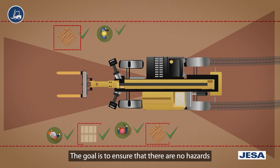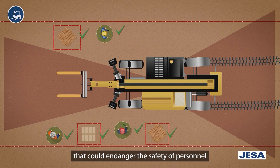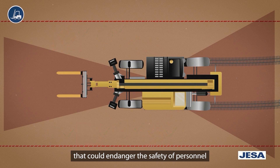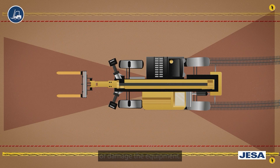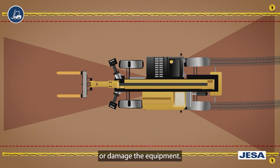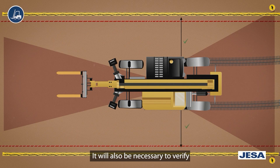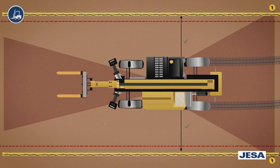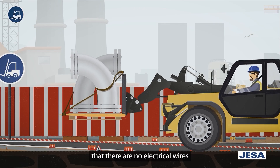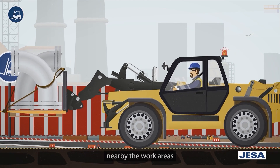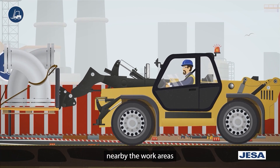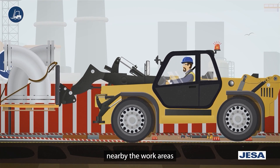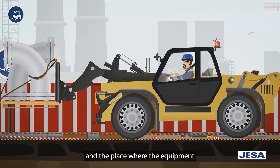The goal is to ensure that there are no hazards that could endanger the safety of personnel or damage the equipment. It will also be necessary to verify that there are no electrical wires nearby the work areas and the place where the equipment is parked is stable.